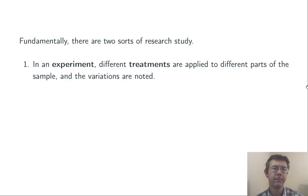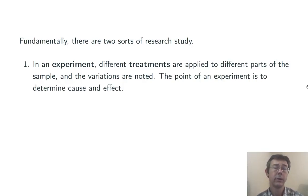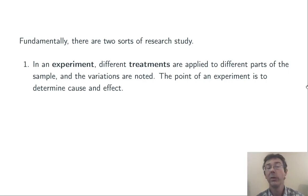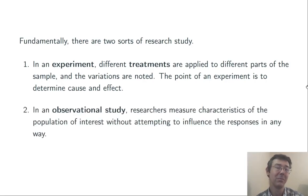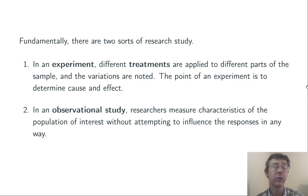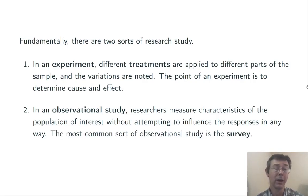Here's the difference between them. In an experiment, different treatments are applied to different parts of the sample, and then the variations are noted. The whole point is that we would like to determine cause and effect — if we have different outcomes between the groups, we'd hope to attribute that to the different treatments. In contrast, observational studies are ones in which researchers just measure characteristics of the population of interest without attempting to influence the responses in any way. The most common sort of observational study is just a sample survey.